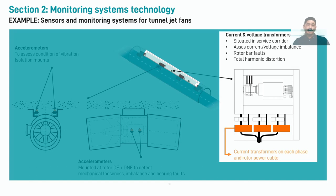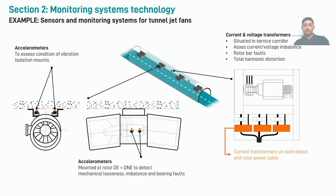We've installed our sensors and each are connected to the monitoring system via cables or wirelessly, or a combination of both. The monitoring system is capturing the sensor data and making some initial analysis. There are two key steps to follow: the first is to send this information somewhere, which we'll cover in the next section on systems integration, and the second is using that data for further processing and analysis, which will be our last section on data analytics.